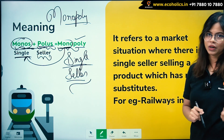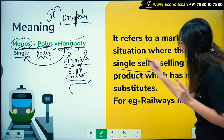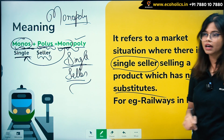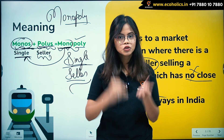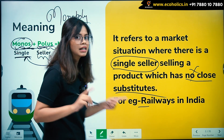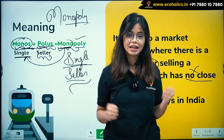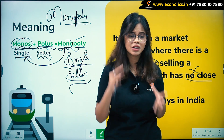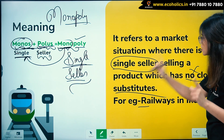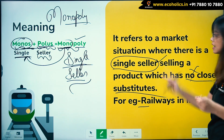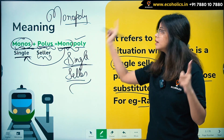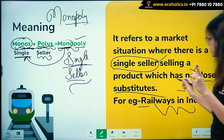It refers to a market situation where there is a single seller selling a product which has no close substitute. One such example is railways in India. If you have to travel via train, you have to book a ticket from Indian Railways or the IRCTC site only, which is run by the Indian government. There is no other substitute available if you want to travel through a train.